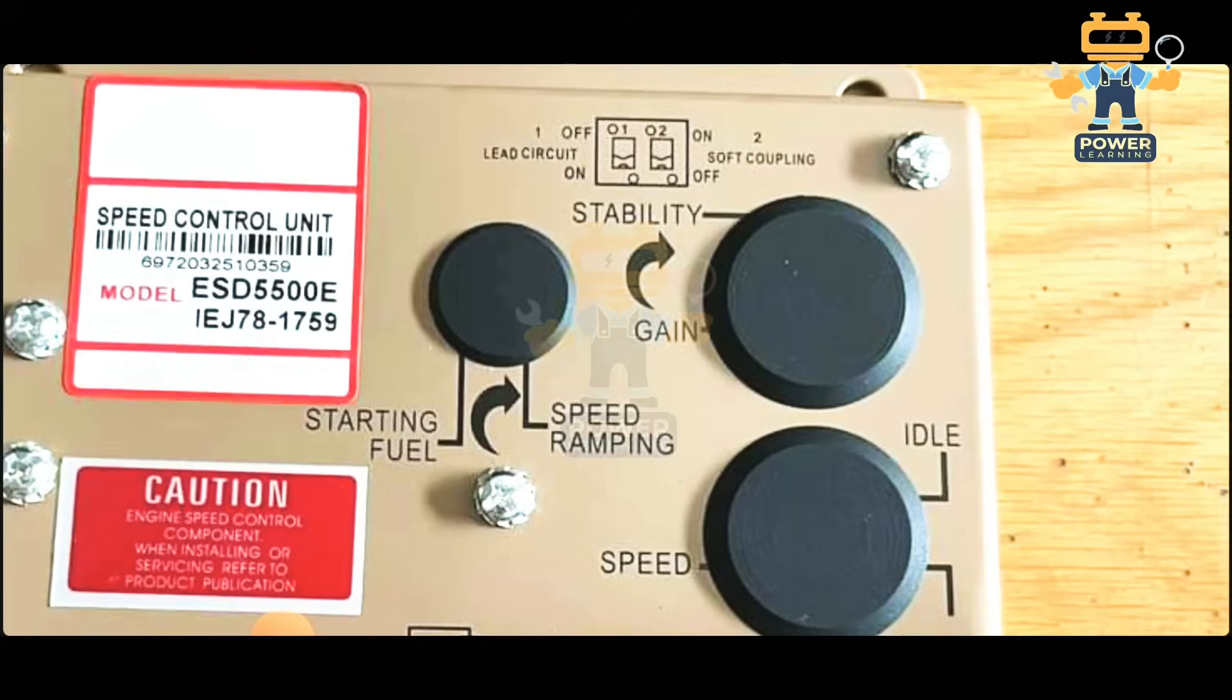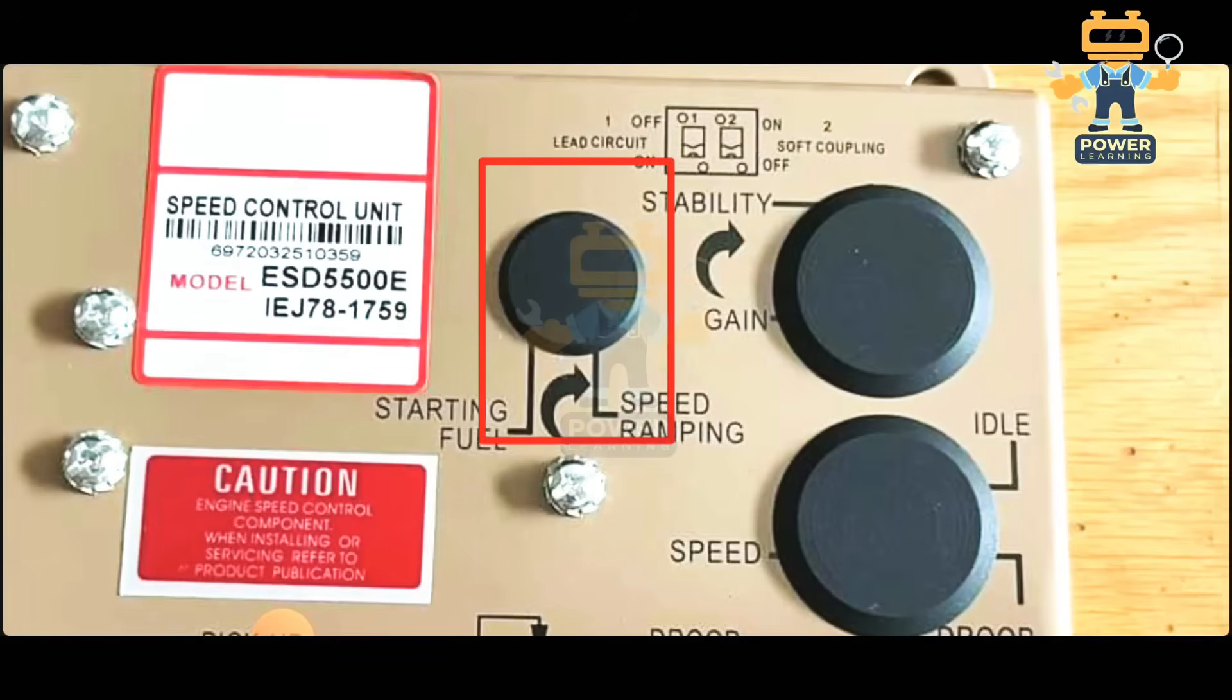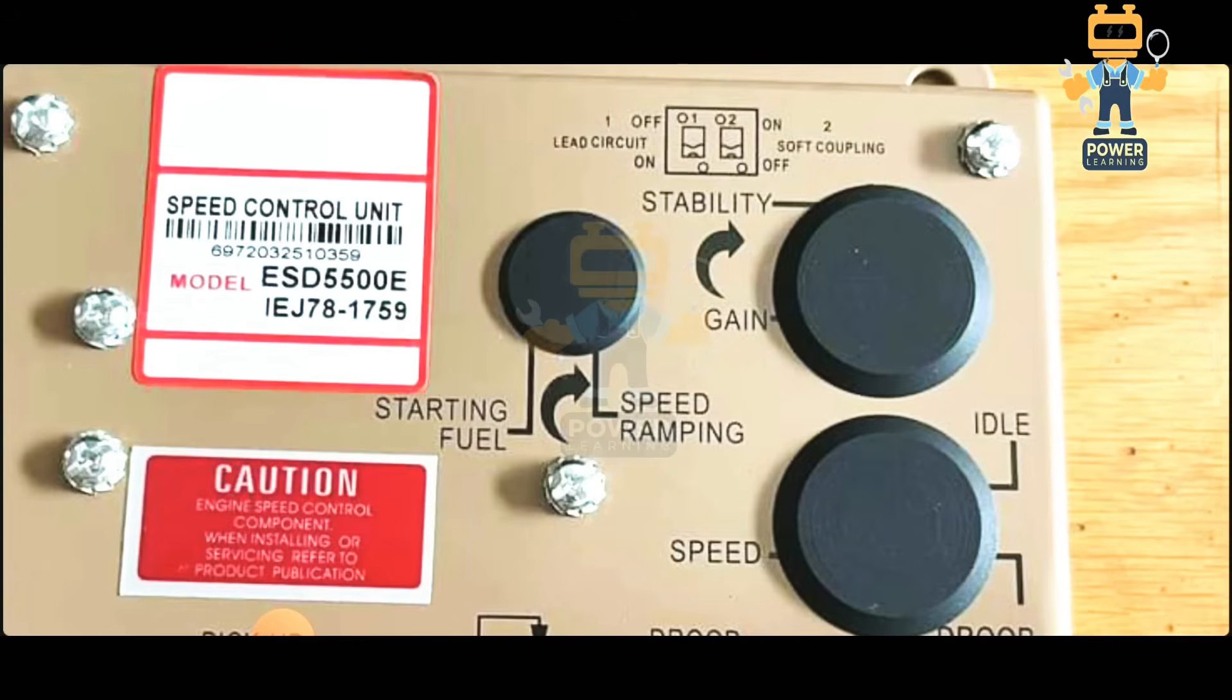After that, here in the third cover, if you remove it you can find here two potentiometers - one for starting fuel and one for speed ramping. So this you can adjust from here.